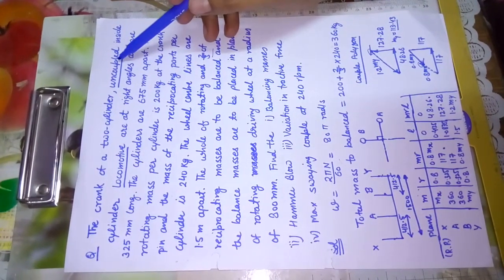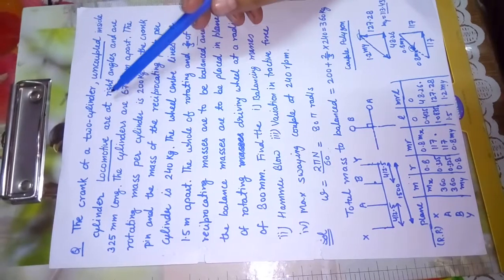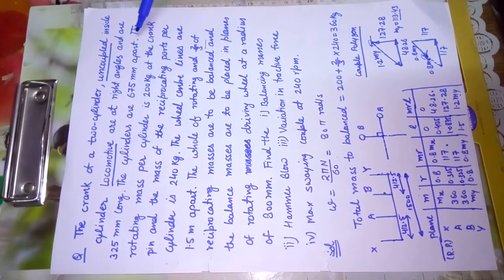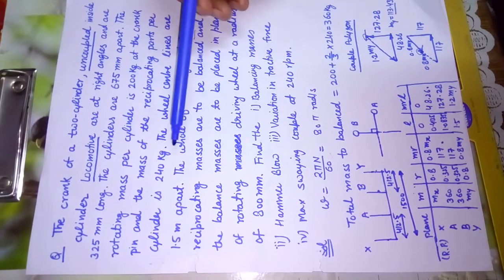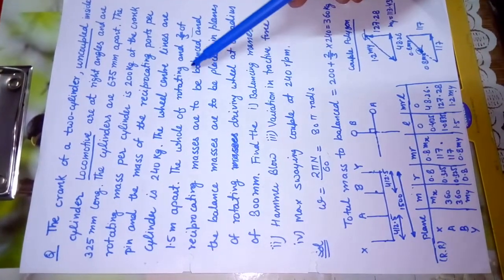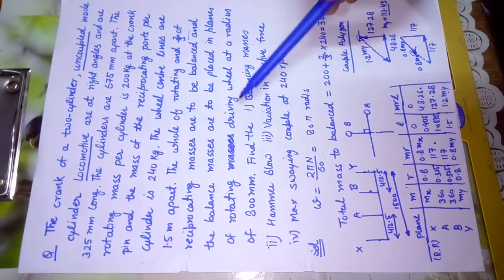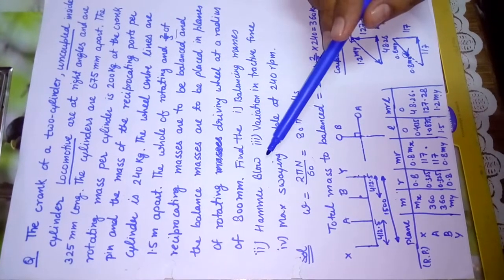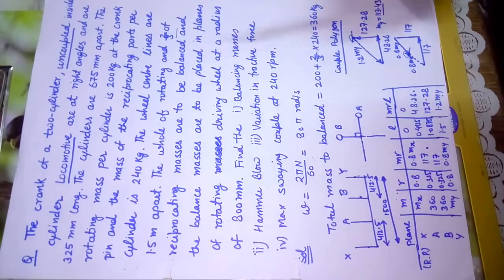We are solving the problem of an uncoupled inside cylinder locomotive. The cranks are at right angles and 325 mm long. The cylinders are 675 mm apart. The rotating mass per cylinder is 200 kg at the crank pin, and the mass of reciprocating parts per cylinder is 240 kg. The wheel centerlines are 1.5 meters apart. The whole of the rotating and two-thirds of the reciprocating masses are to be balanced. Balance masses are placed in the plane of the rotating driving wheel at a radius of 800 mm. We need to determine the balancing masses, hammer blow, variation in tractive force, and maximum swinging couple at 240 rpm.